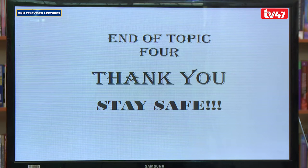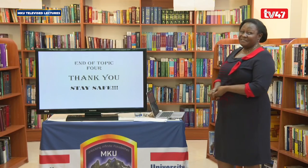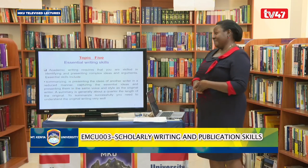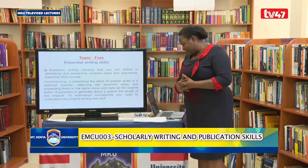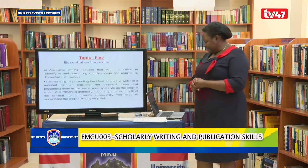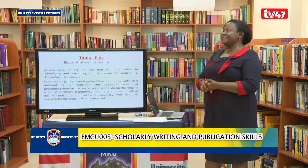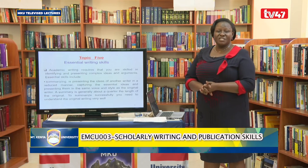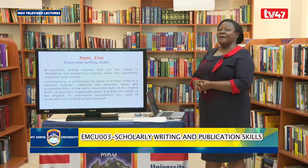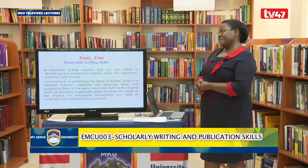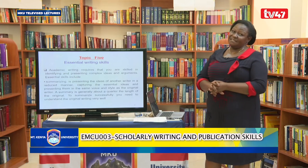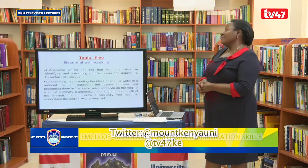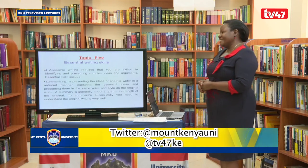That brings us to the end of topic four. We move on to topic five. In our previous lesson we were looking at postgraduate standards of writing and saw what is essential — the conventions are very critical. Now let us look at the essential writing skills. In topic five, we focus on essential writing skills. Academic writing requires that you are skilled in identifying and presenting complex ideas and arguments.